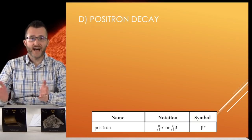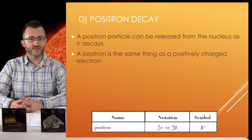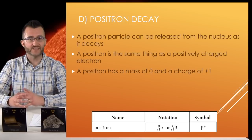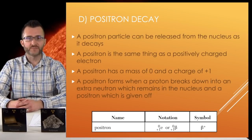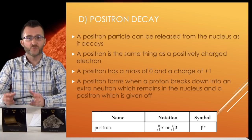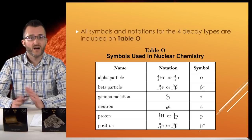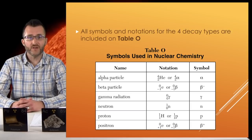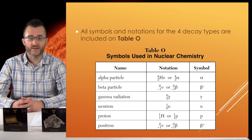Finally, we have positron decay. A positron particle can be released from the nucleus as it decays. A positron is the same thing as a positively charged electron. It has a mass of 0 and a charge of +1. A positron forms when a proton breaks down into an extra neutron, which remains in the nucleus, and a positron, which is given off. All symbols and notations for the four decay types are included on Table O, which represents symbols used in nuclear chemistry. The notation and symbol for both neutrons and protons are included.